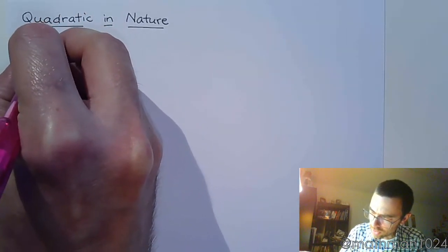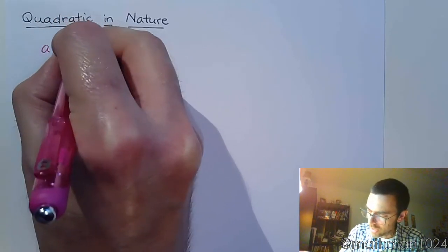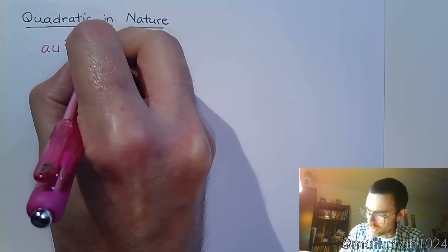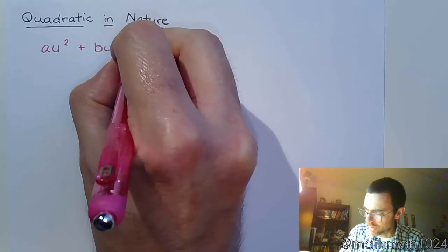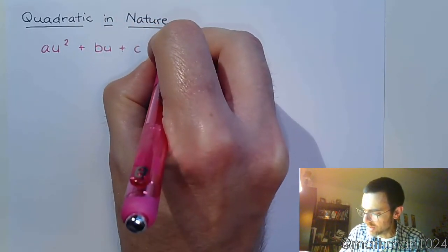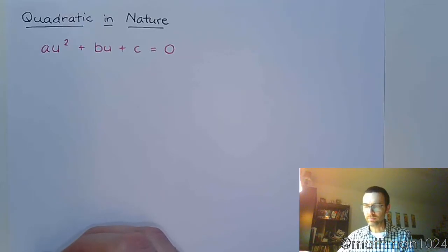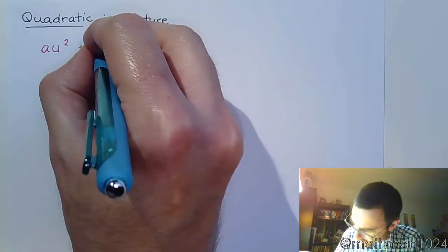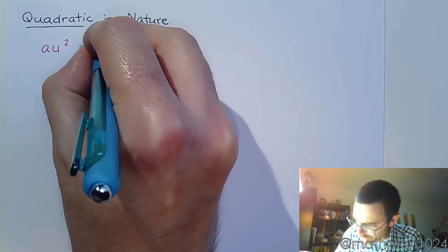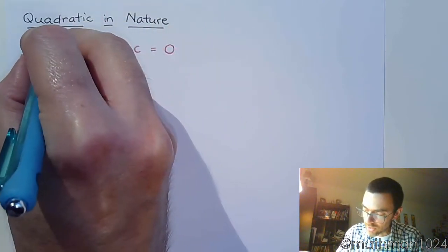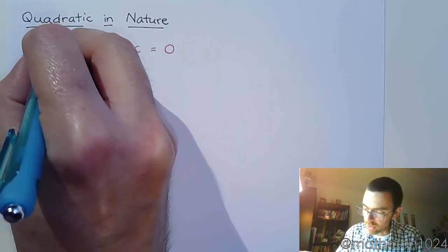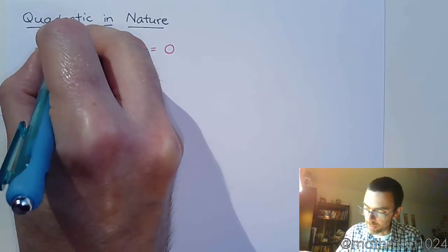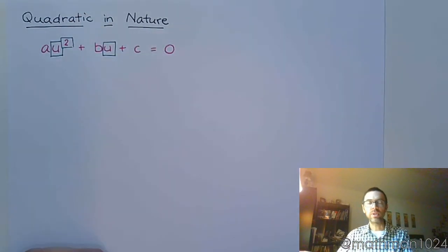So equations that are quadratic in nature take on this form: au² plus bu plus c is equal to zero. What you're going to notice is you're going to have a constant here at the end, some variable expression represented by u, and you're going to see that same variable expression with double the power, with twice the exponent at the beginning. And if an equation can be written in that form, then we can solve it using quadratic methods.